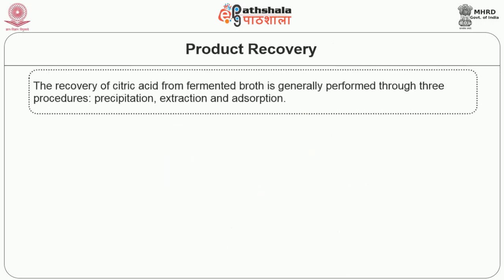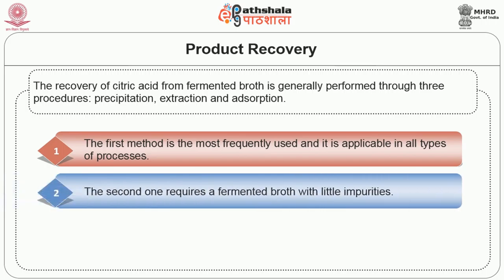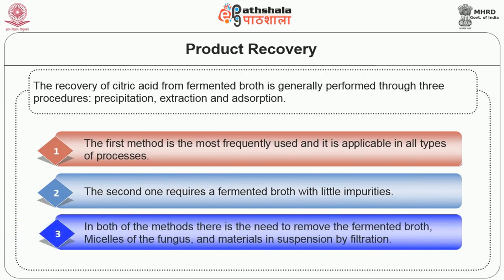Coming to the product recovery, the recovery of citric acid from fermented broth is generally performed through three procedures: precipitation, extraction and adsorption. The first method is the most frequently used and is applicable in all types of processes. The second requires a fermented broth with little impurities. In both methods, there is the need to remove the fermented broth, mycelium of the fungus and materials in suspension by filtration.